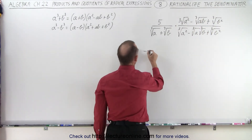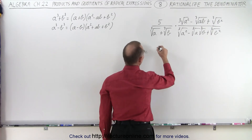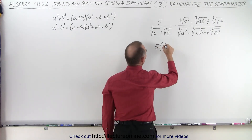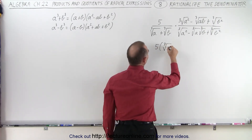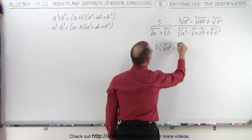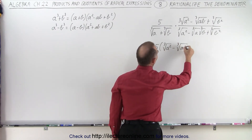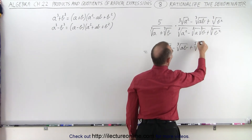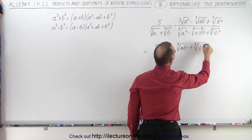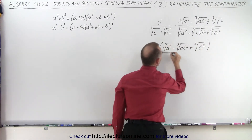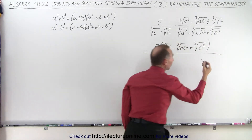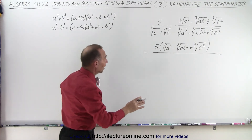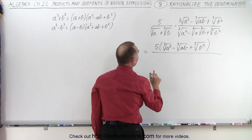To show why that works, we'll show it in just a moment. So this is five times — in the numerator we have the cube root of a squared minus the cube root of a times b, plus the cube root of b squared. In the denominator, we're going to multiply it out so you can see what that's going to look like. Eventually it'll be a plus b.